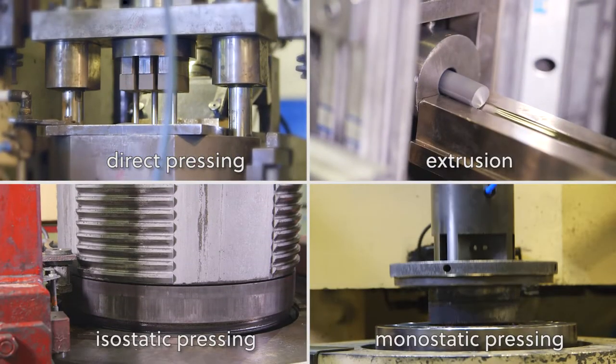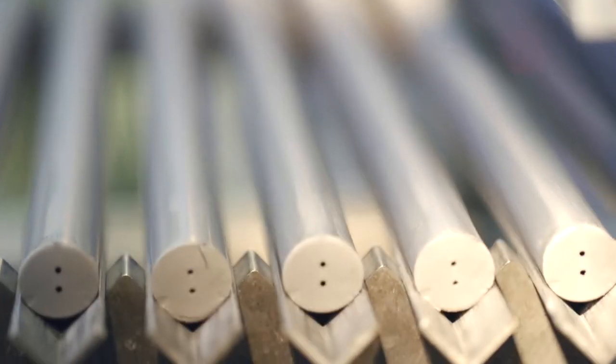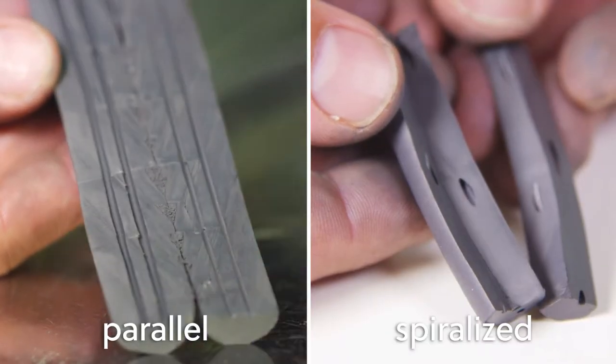Berlin Carbide offers four molding techniques. When choosing extrusion, we're even able to include cylindrical cooling channels—central, parallel, or spiralized.